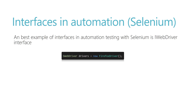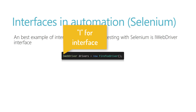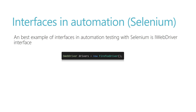The first interface you will ever encounter while writing your Selenium code is: IWebDriver driver = new FirefoxDriver(). That's what we initially do to open the Firefox browser. So IWebDriver here is actually an interface. In C#, the 'I' prefix represents the naming convention for an interface. If it's just WebDriver it is a class; if it is IWebDriver then it's an interface. You can name an interface without an 'I' prefix, but it is a C# convention.